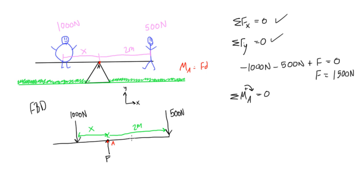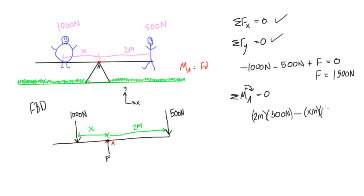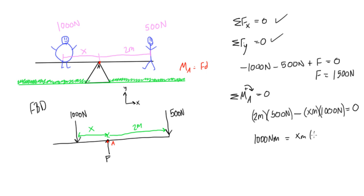If a force causes clockwise rotation around point A, we define that as positive. So we have two meters times 500 newtons as a positive value, because that force wants to rotate the plank clockwise around point A. Then we subtract x meters times 1000 newtons, since that causes counterclockwise rotation, which is negative. Setting this equal to zero for static equilibrium gives us 1000 newton-meters equals x times 1000 newtons. Dividing both sides by 1000 newtons, x equals one meter.